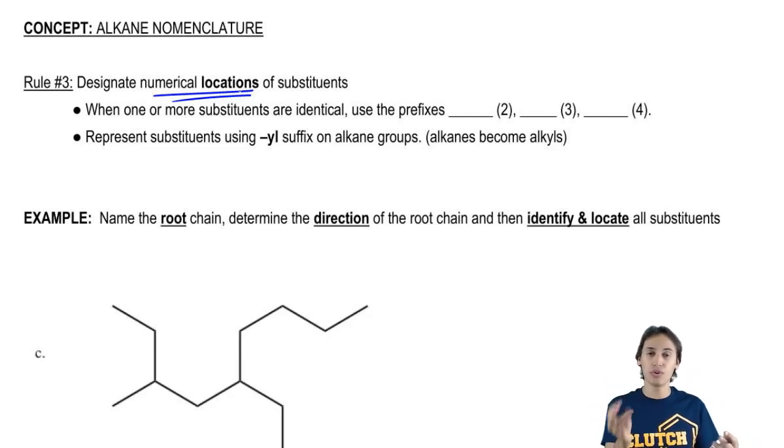Now, when there's more than one identical substituent – so let's say that I have two one-carbon groups – instead of naming them both individually, we want to cluster them together to save some space and to save some time.